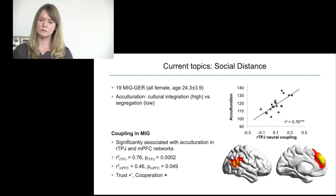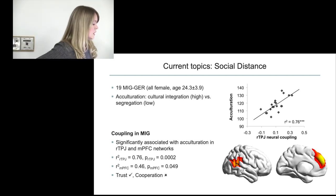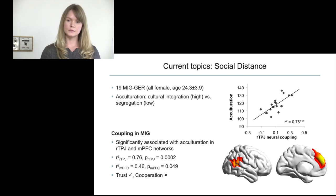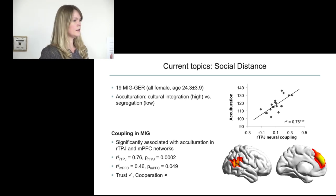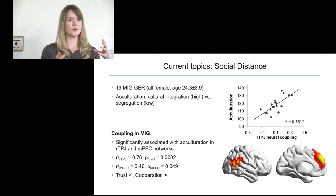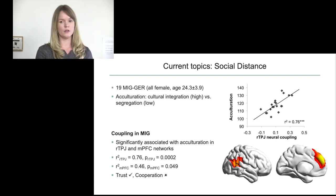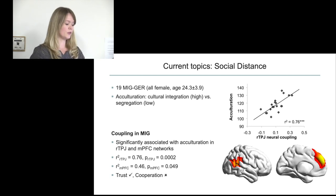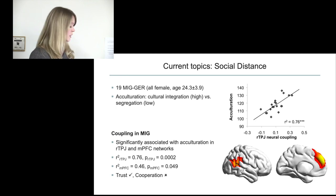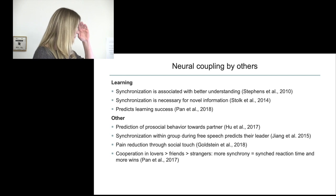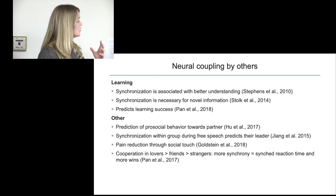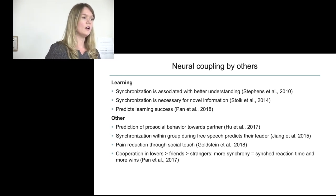Regarding relating behavioral or demographic measures to neural coupling: the coupling score is something between subjects — a pair score — so you can't relate it to the age or any other variable of just one individual. The same applies to the childhood trauma questionnaire scores; you should use the combined couple score, because coupling is inherently a pair measure.